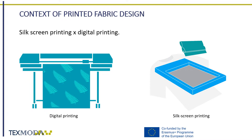Silk screen printing, also named serigraphy, is a much more ancient technique that can be manual or mechanic. Mechanic silk screen printing is usually linear, where the fabric or garment enters and exits the machine in line after being subjected to several coats. On the other hand, it can be circular, where the garment or fabric rotates under each screen, which applies different colors and patterns in order to obtain the final composition.